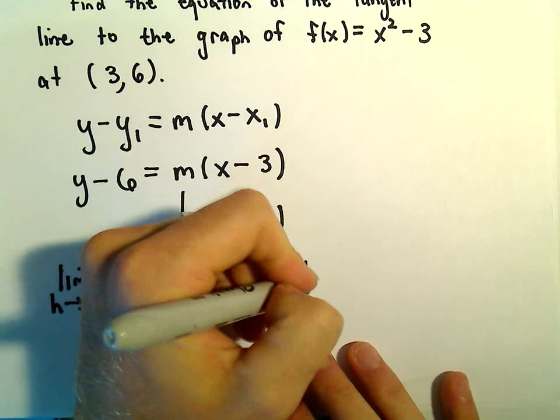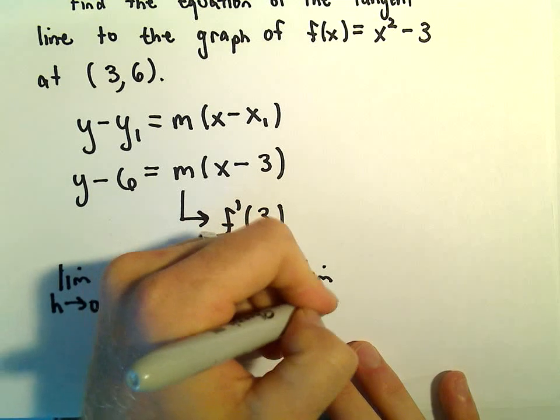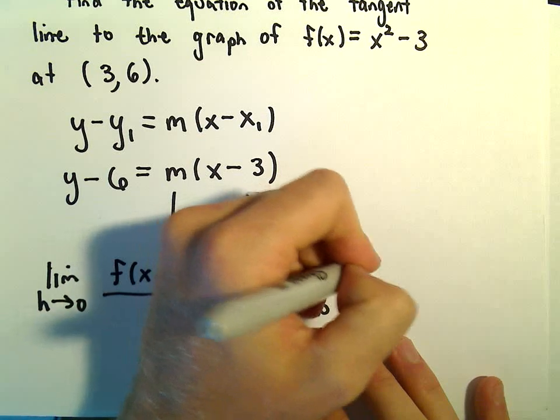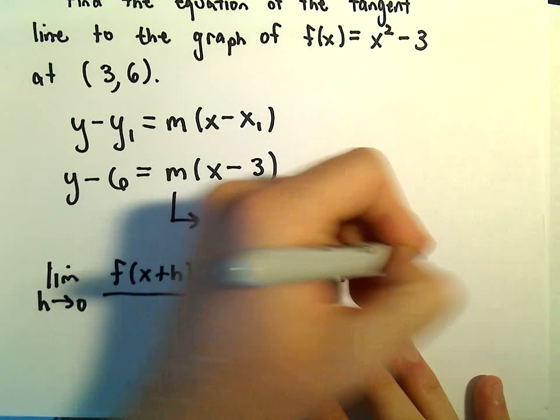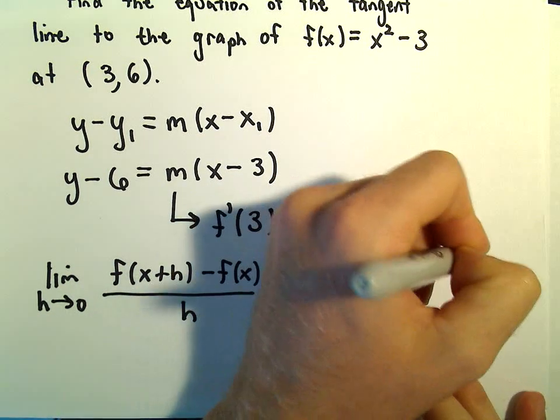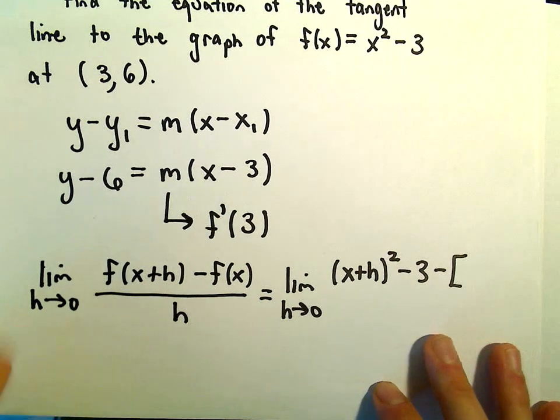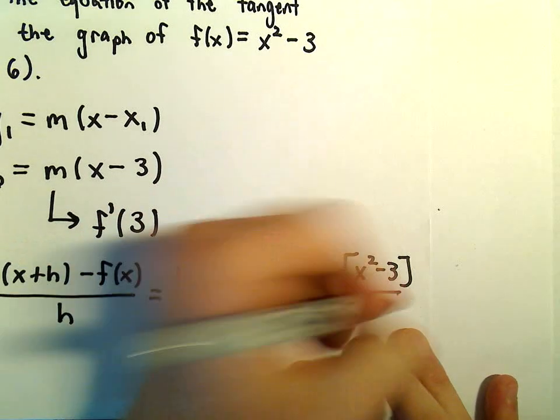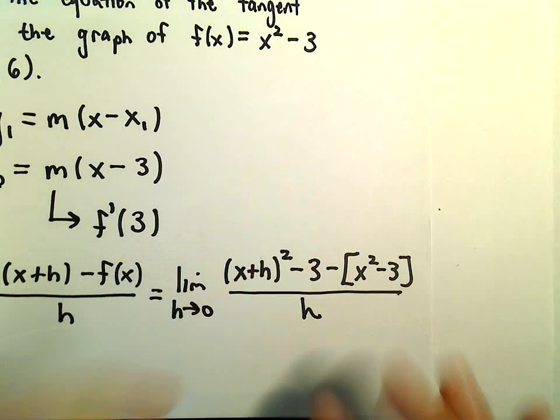The limit as h approaches 0 of [(x+h)² - 3 - (x² - 3)]/h. We replace all the x's with x+h, giving us (x+h)² - 3, then subtract the original function x² - 3, all divided by h.